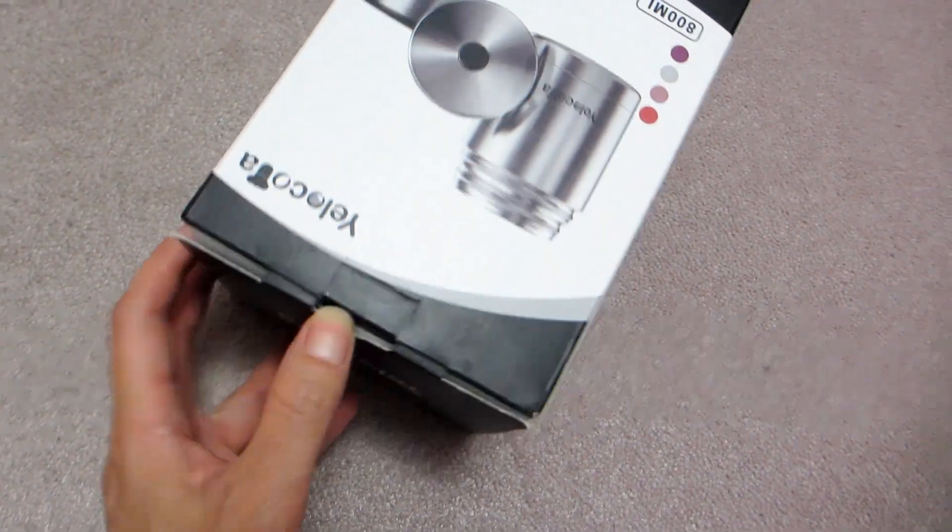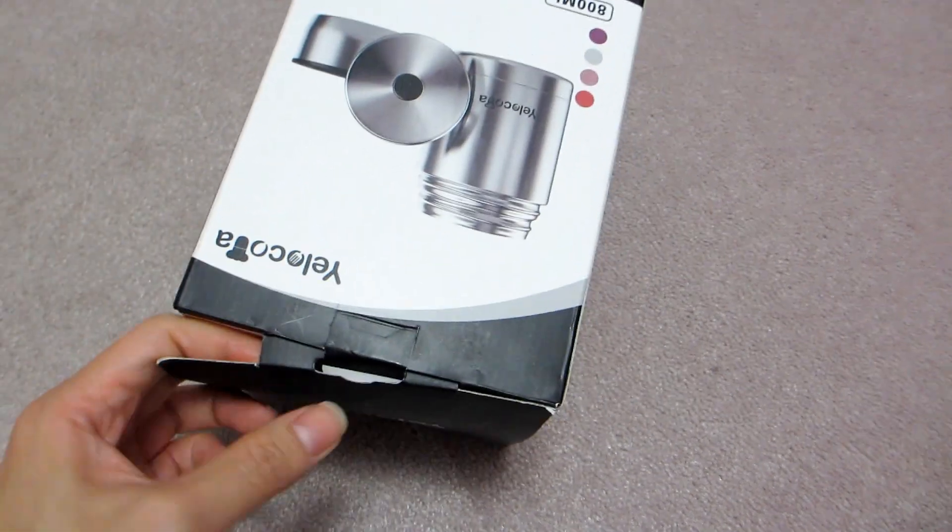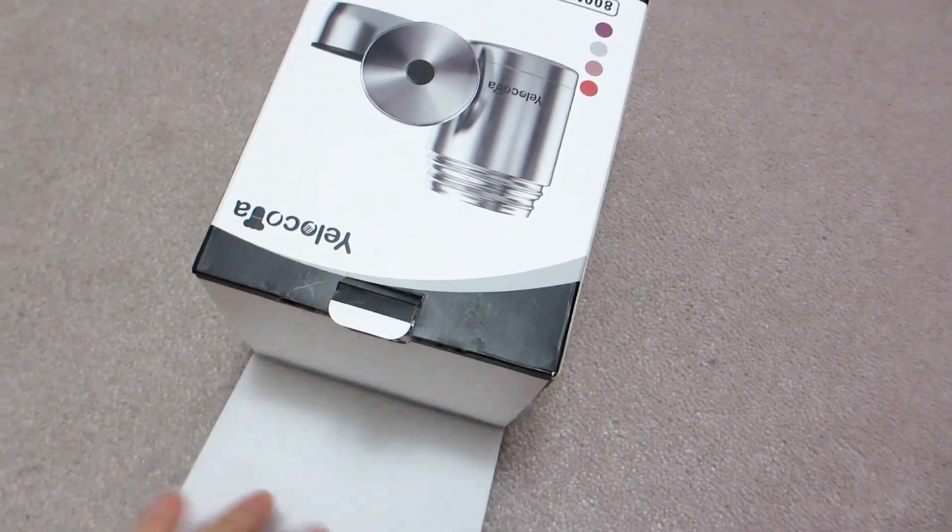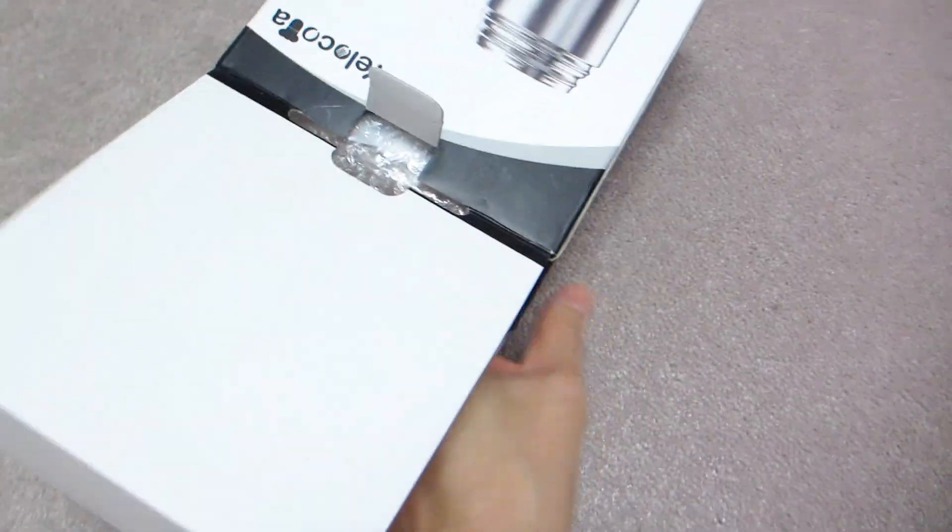Hey guys, today I'm going to do an unboxing with you of the Yellow Coda Thermos. This one has an 800 mil or 27 ounce capacity and can be used to store your hot or cold foods while you are away from home.